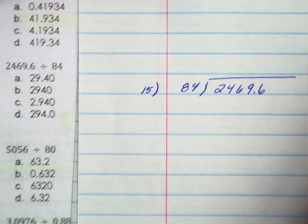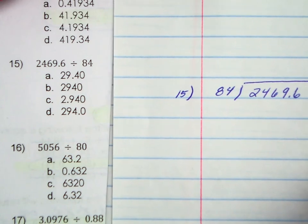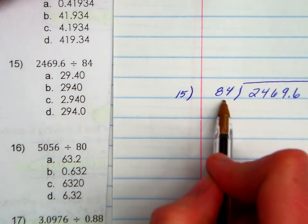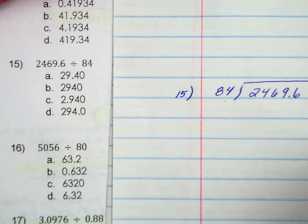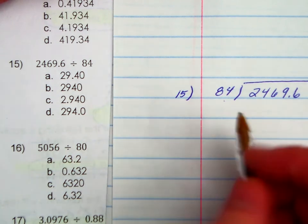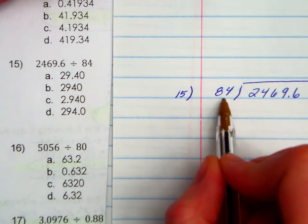We're going to put 84 into 2,469.6. I know when we did decimal division, we moved some decimals around. We did. But you only move the decimals if you have to. This divisor is a whole number. So don't do anything. Don't move anybody. If the divisor is a whole number, leave it alone.